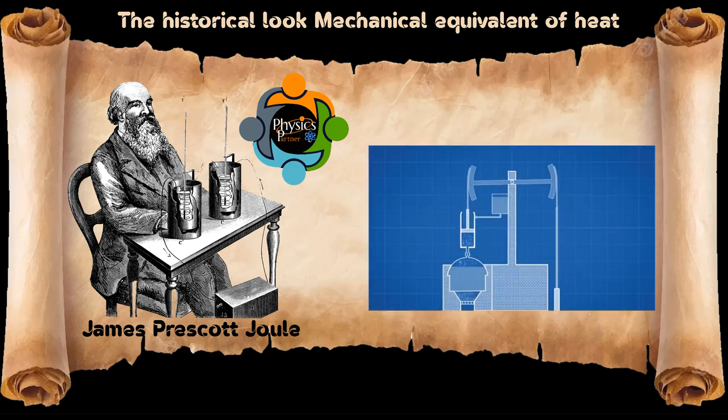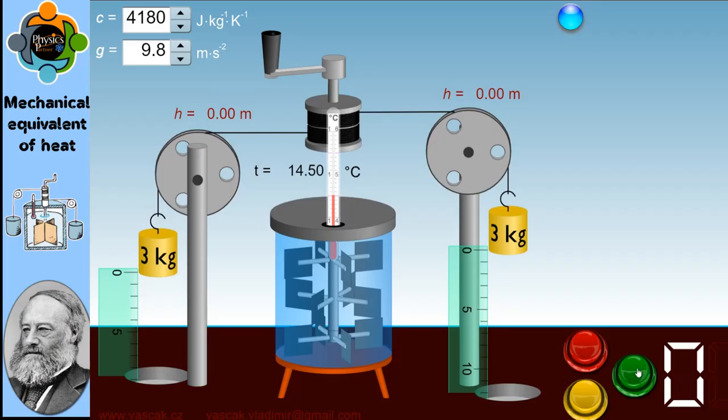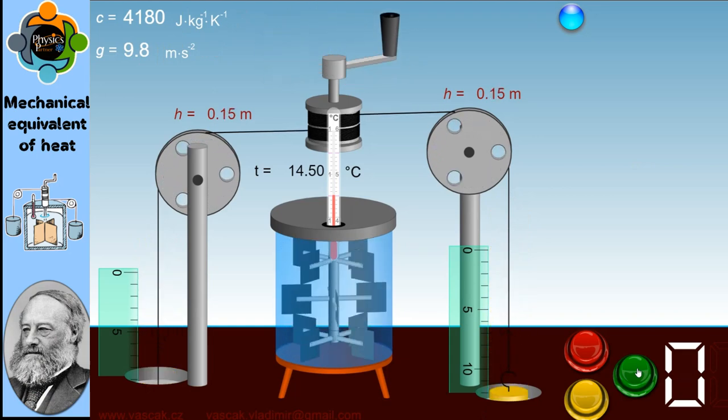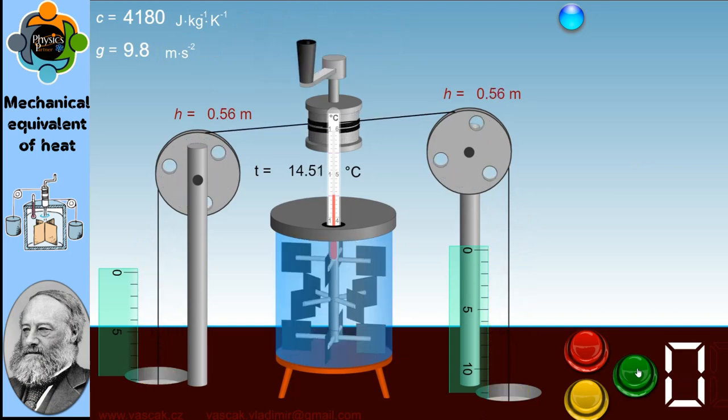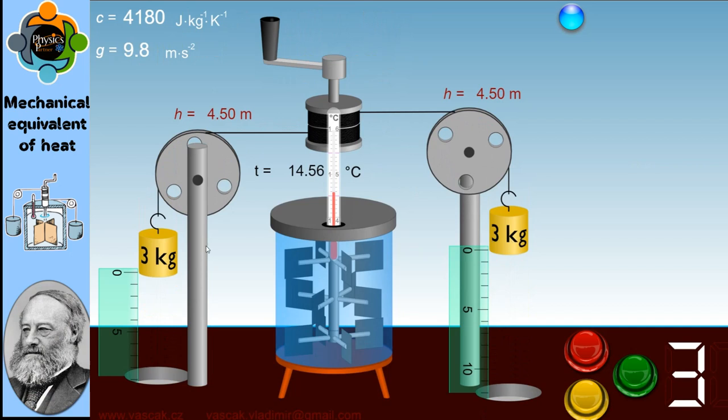Let's talk about his discovery. Throughout his life, Joule conducted various experiments to establish the mechanical equivalent of heat. He determined the mechanical equivalent of heat by performing a series of experiments using a paddle wheel apparatus. He arrived at the conclusion that when a given amount of mechanical work is transformed into heat, the amount of heat produced is directly proportional to the mechanical work done.